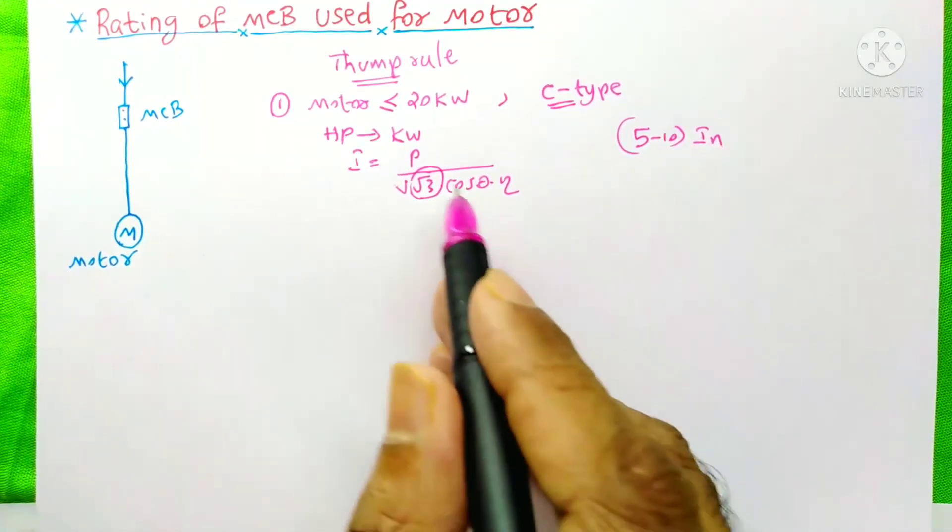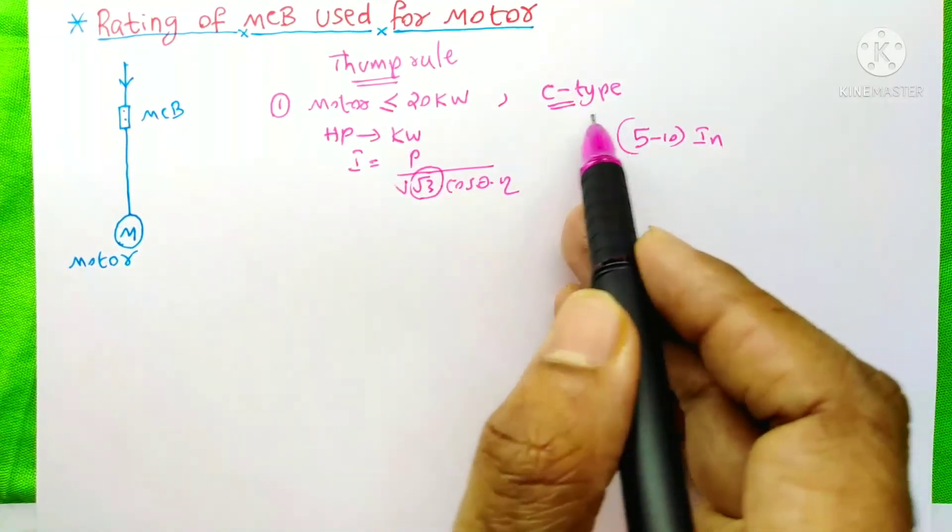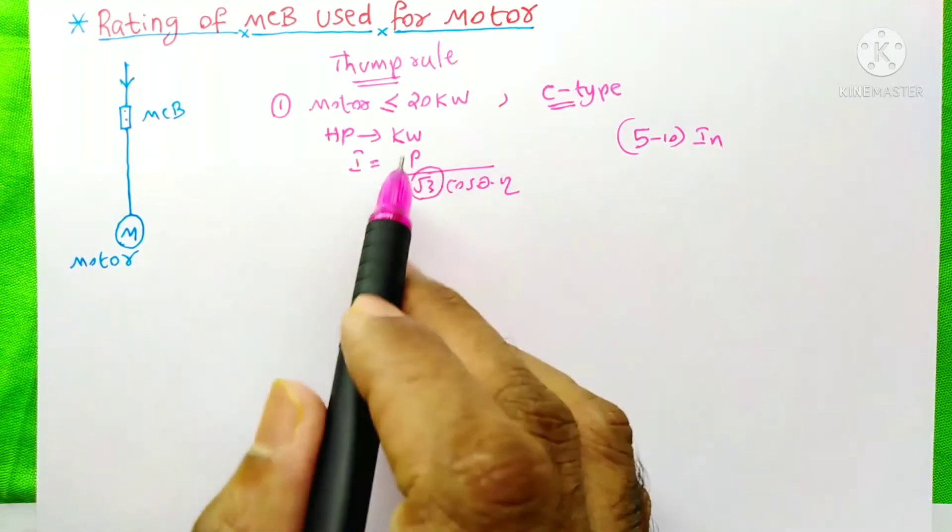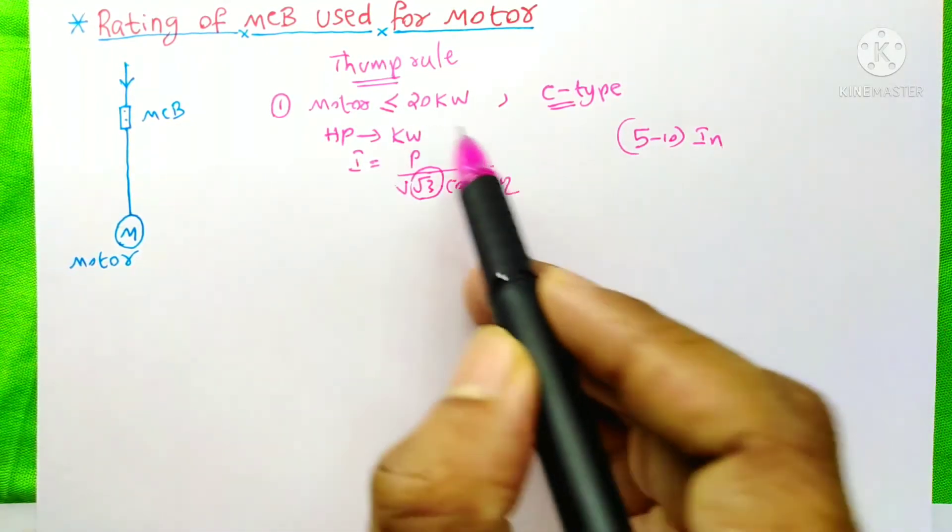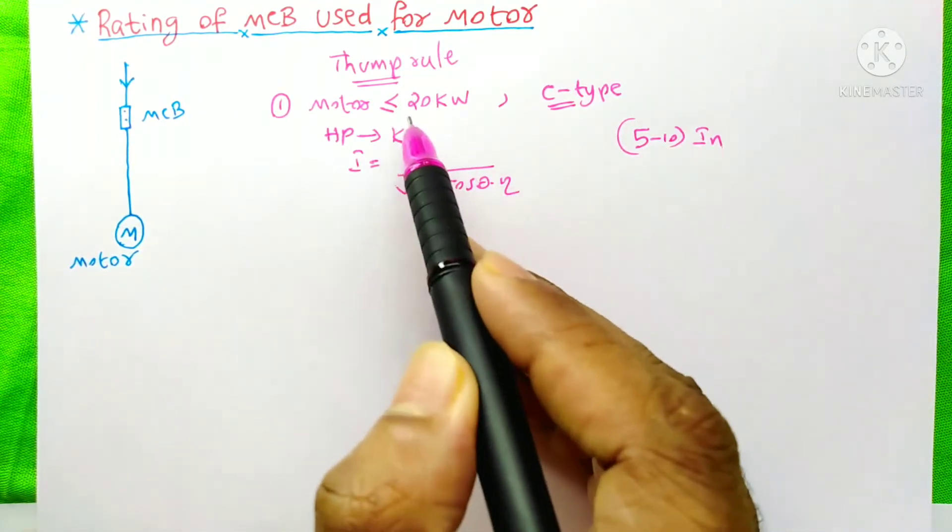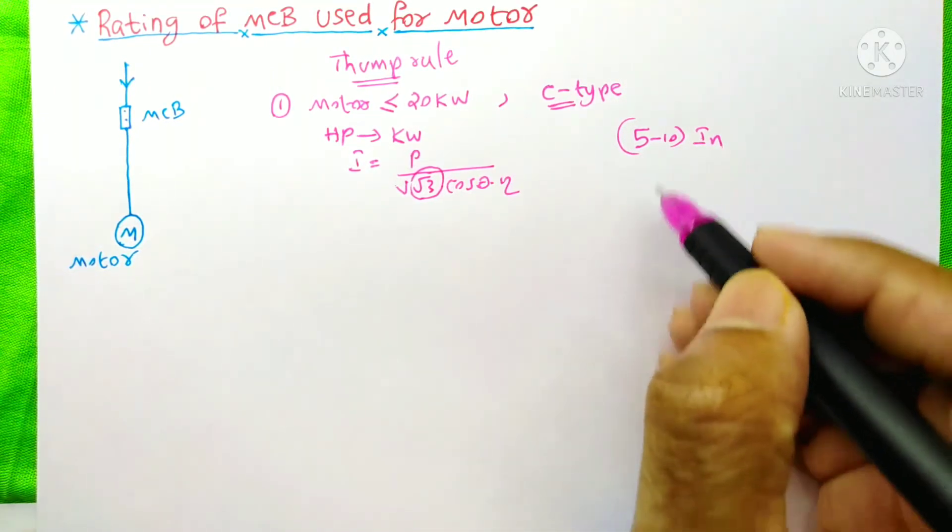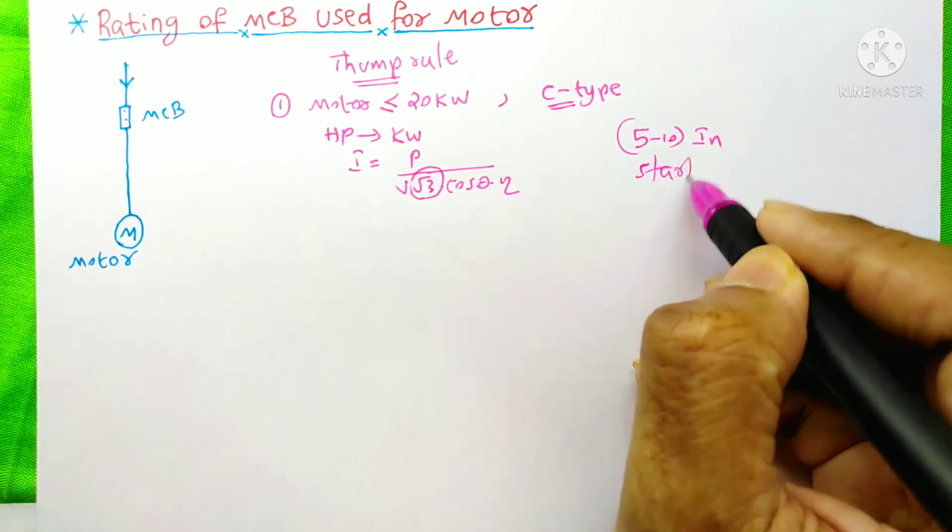Do you know why the engineers always choose the C-type MCB for the motors less than or equal to 20kW? Because they know very well that the motor in this capacity will take only 5 to 10 times of the rated current during the starting of the motor.